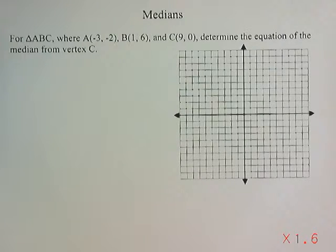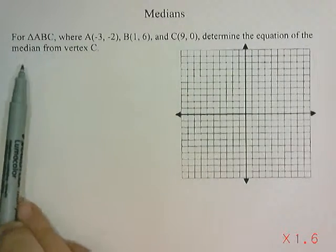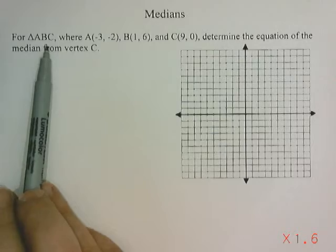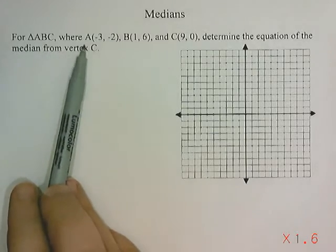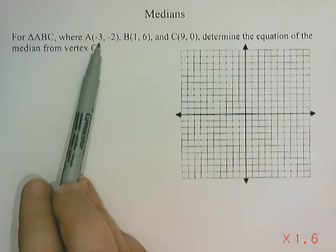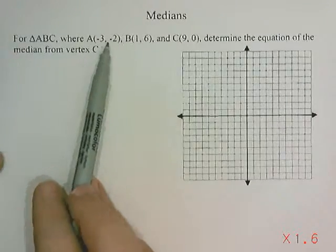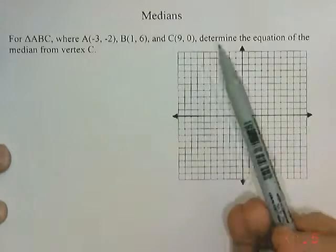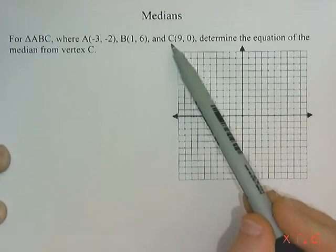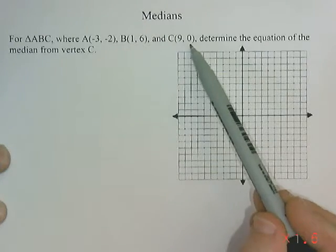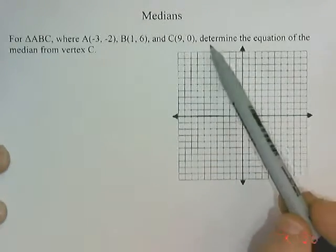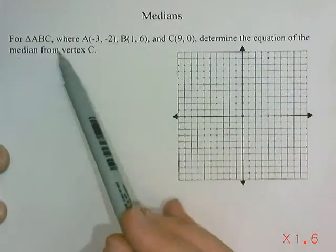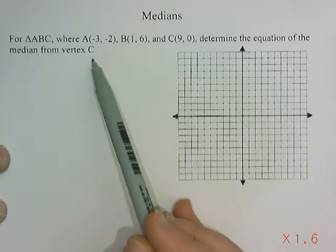Medians. Our question says, for triangle ABC, where A is the point negative 3, negative 2, B is the point 1 and 6, and C is the point 9 and 0, determine the equation of the median from vertex C.